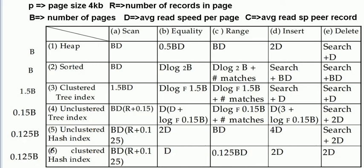First, we have some variables we rely on in our calculations or comparisons between different costs. We have B, which is the number of pages; D is the average read speed per page; C is the average read or access speed per record; R is the number of records per page; and P is the page size, which is 4KB or 8KB.